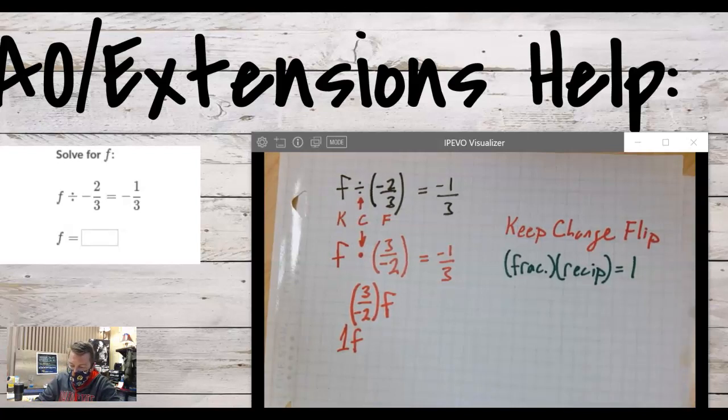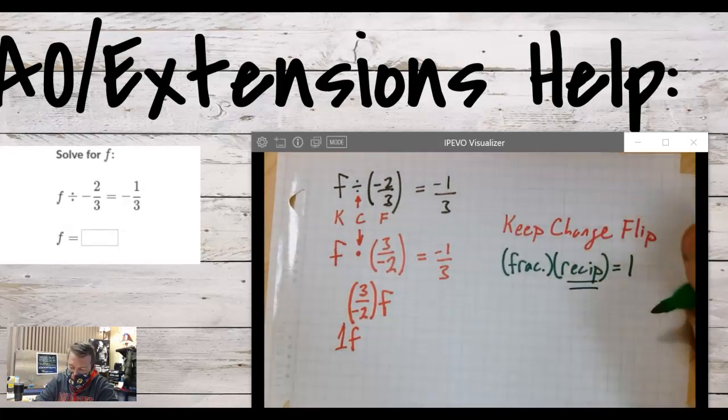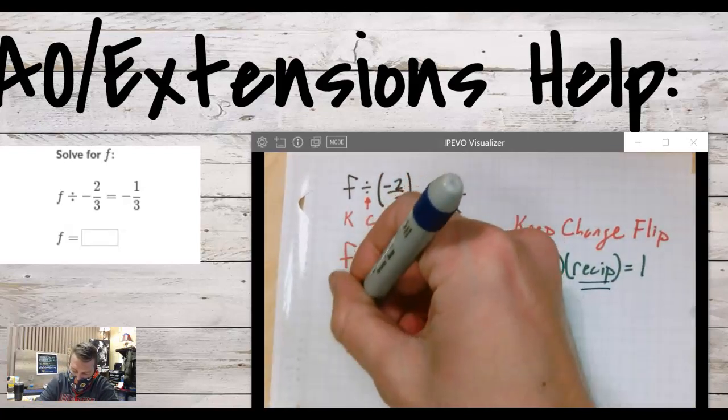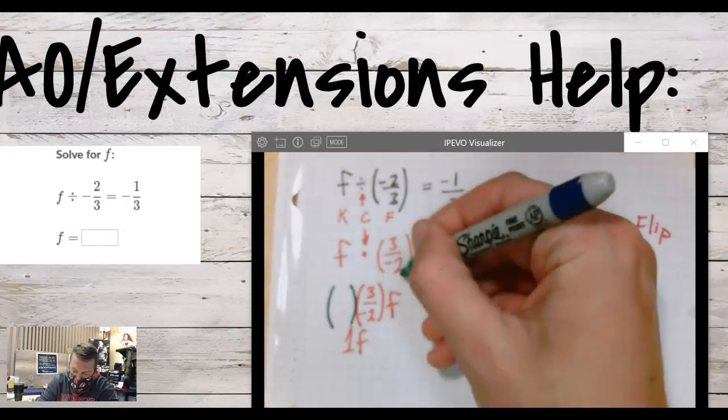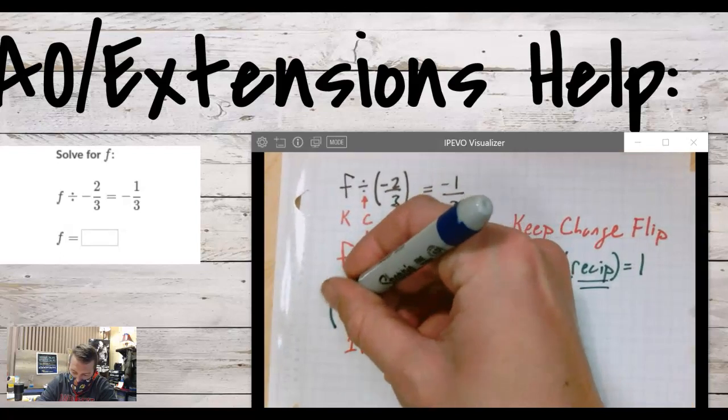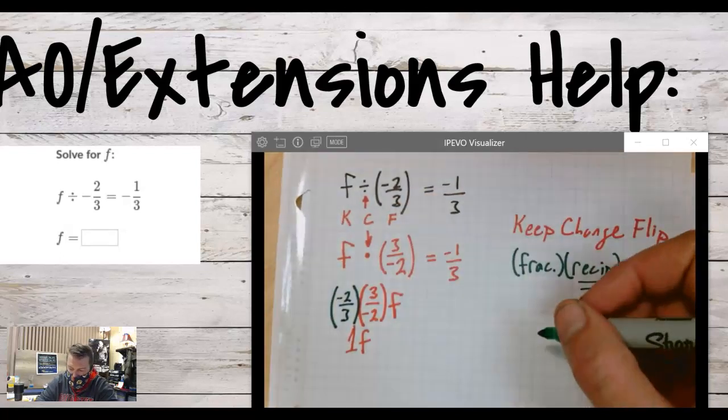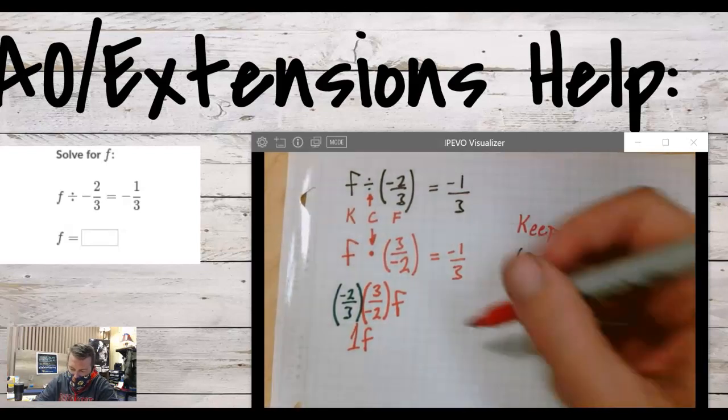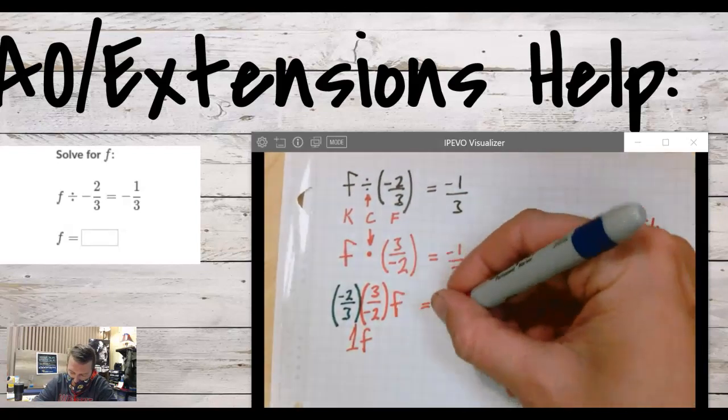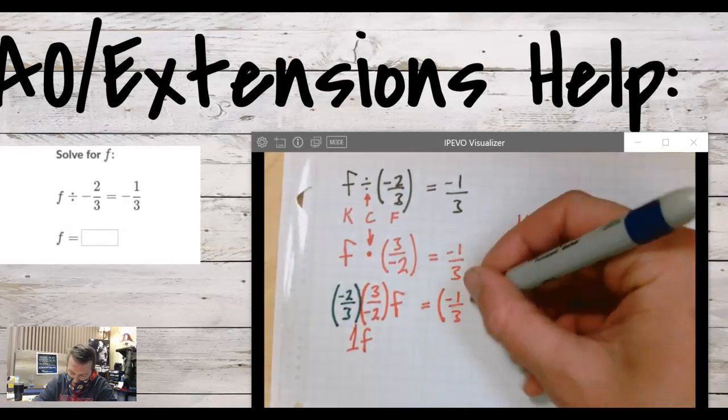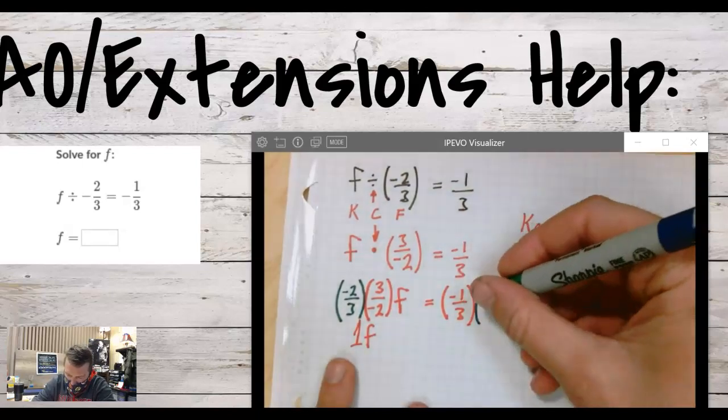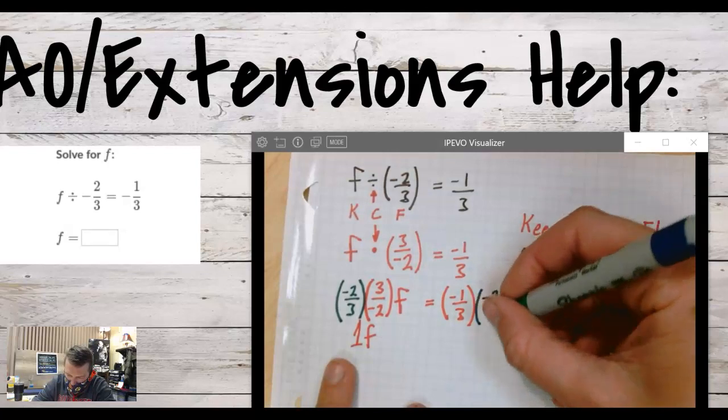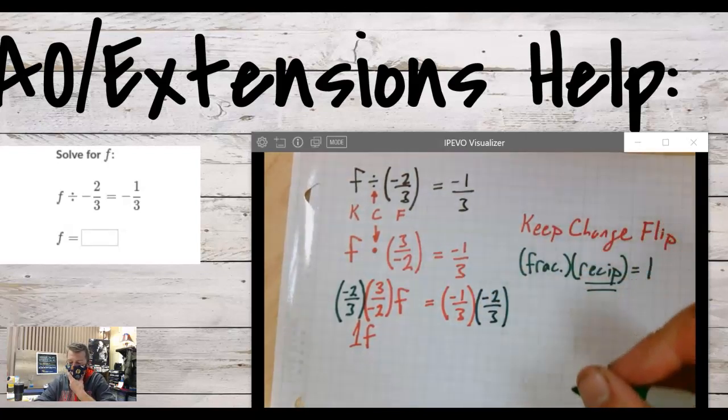Now we're going to use this reciprocal knowledge. I'm going to multiply by the reciprocal of the fraction that we're trying to get rid of, so negative two over three. We also have to do that to the right side, because we can't just do something on one side. So we have to multiply by negative two over three over here.